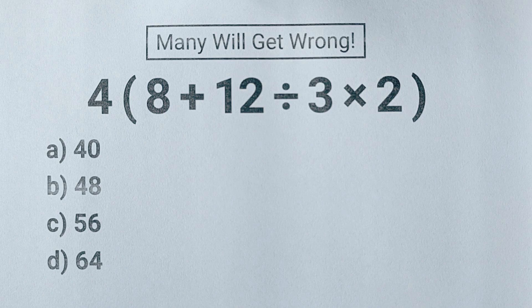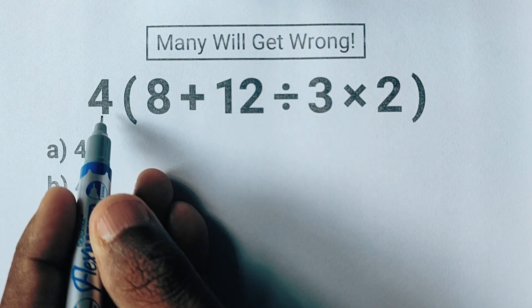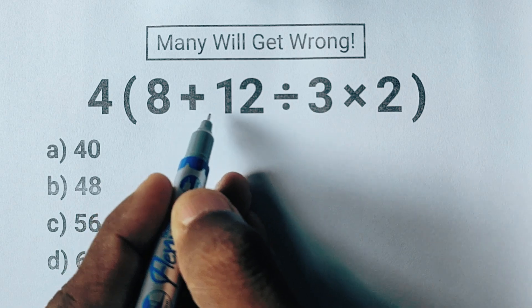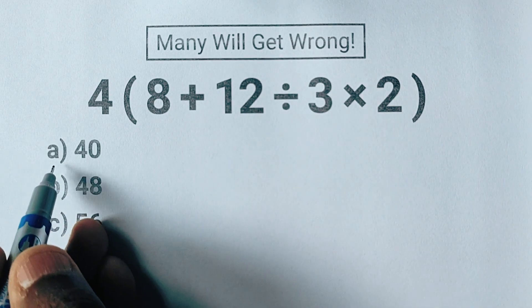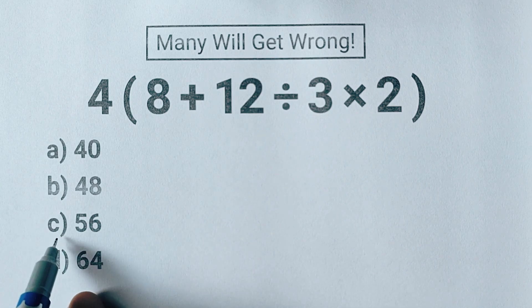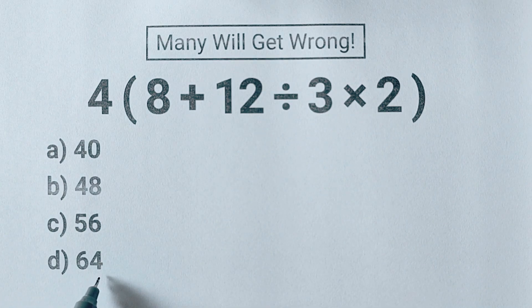Here's the problem: 4(8 + 12 ÷ 3 × 2). Your answer choices are A) 40, B) 48, C) 56, and D) 64.